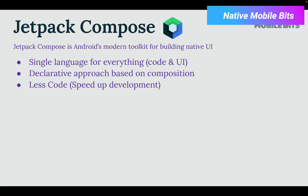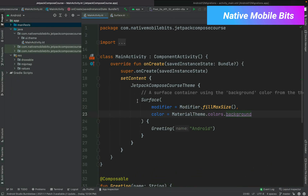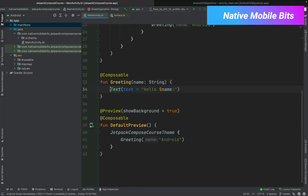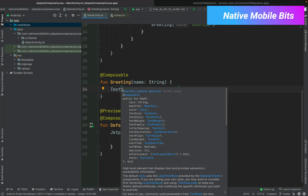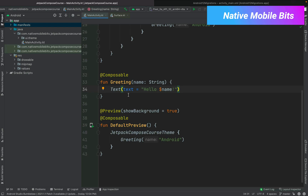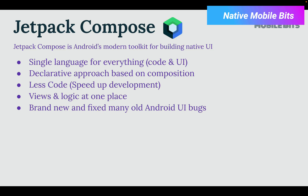Jetpack Compose also has very less code. For example, if you want to make a list, with XML you need RecyclerView or ListView, then you need to make adapters and so on. Inside Jetpack Compose it's straightforward. The next advantage is that view and logic are both at one place — inside composables we can specify the view and the logic in the same place in the activity class. Also, Jetpack Compose fixed so many older Android UI bugs, like issues with EditText or dropdowns. So we have a lot of good reasons to start with Jetpack Compose.